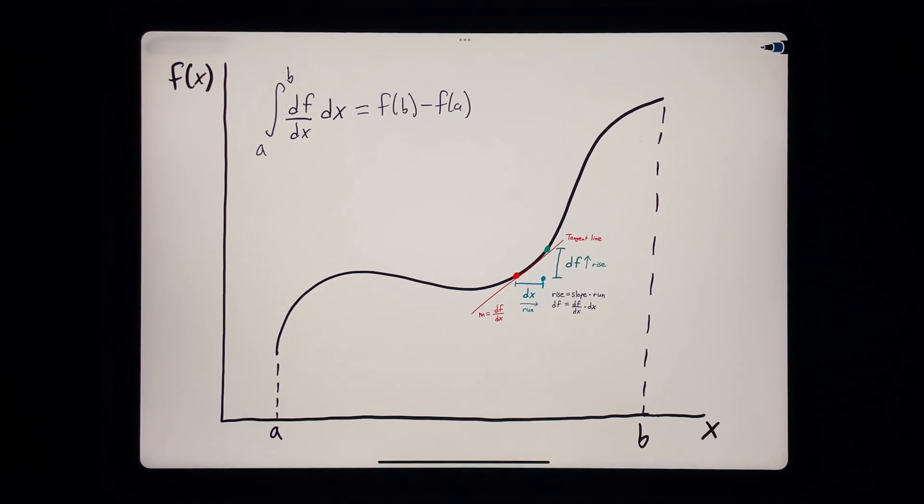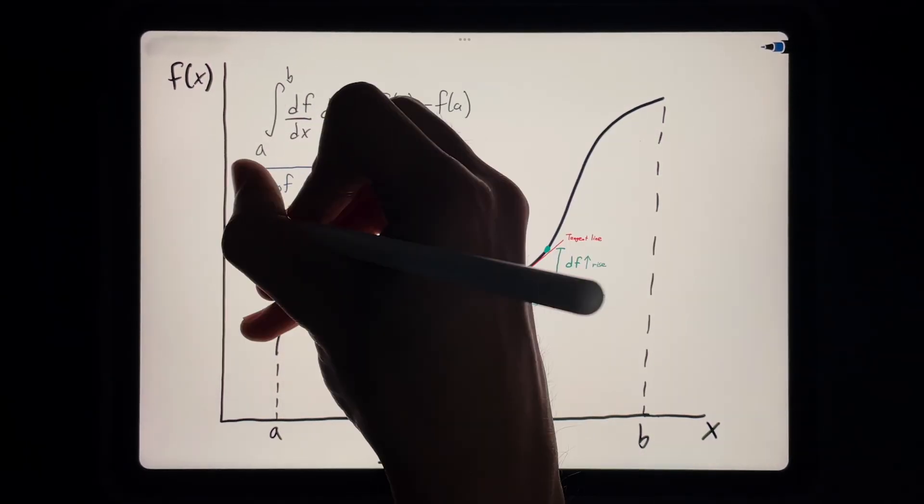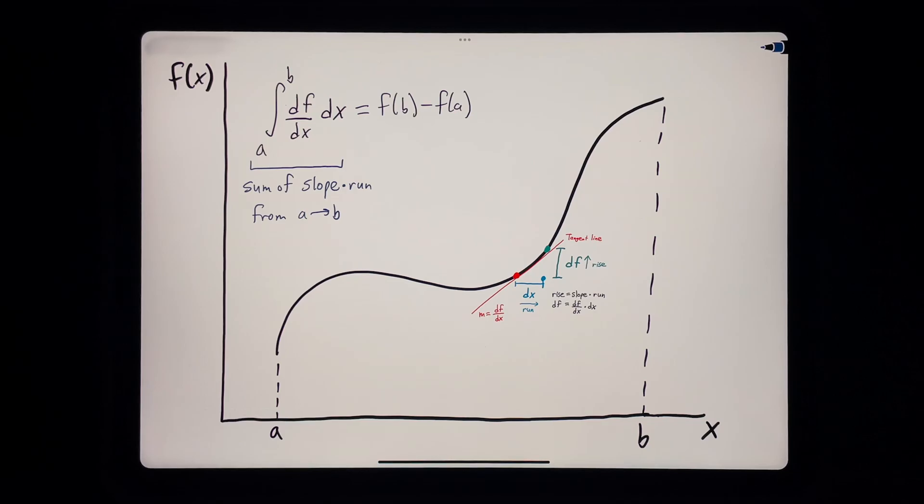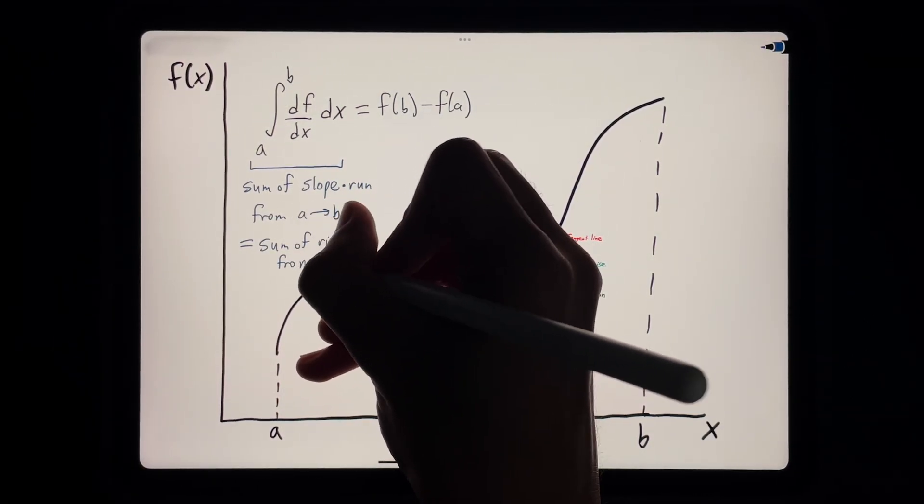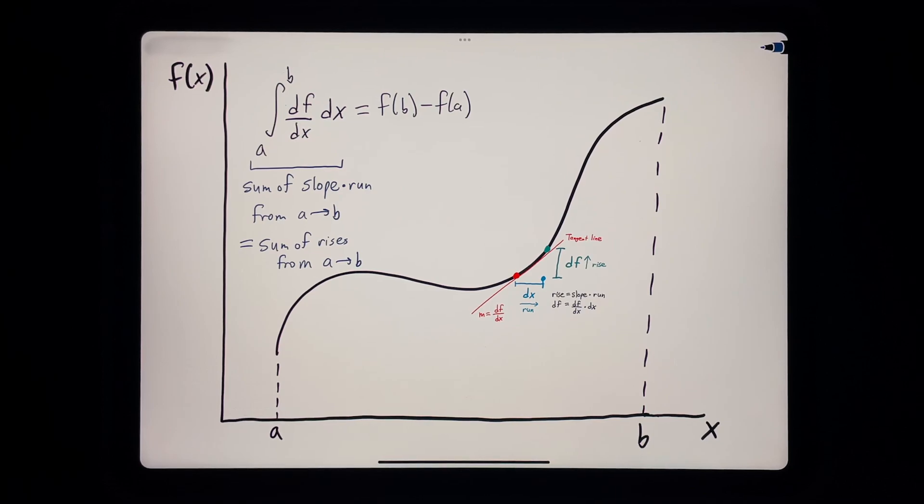So really, when we're taking an integral, we're summing all of the products of the slopes times their infinitesimal runs from a to b, which is the same as summing all of the infinitesimal rises from a to b. The reason we have to consider each infinitesimal dx is that the slope, df dx, changes slightly at each value of x.